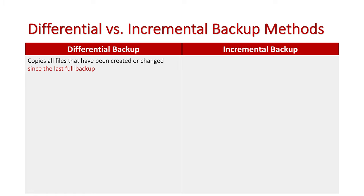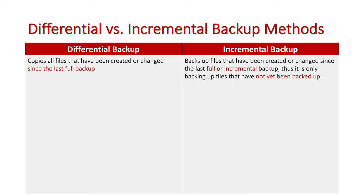A differential backup copies all files that have been created or changed since the last full backup. It ignores every other type of backup that has occurred since that last full backup — for example, if a differential took place on Tuesday and you're doing another on Wednesday, it ignores the Tuesday backup. Incremental backups, by contrast, back up all files created or updated since the last full or incremental backup.